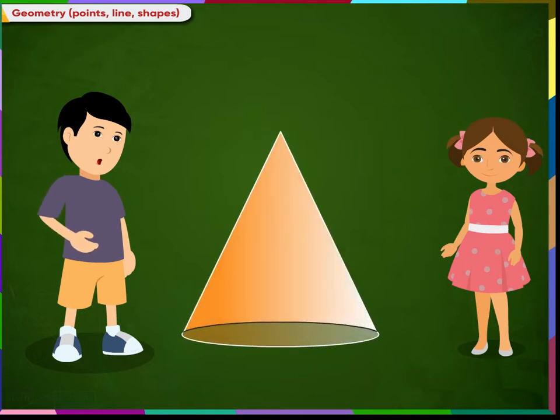This is a cone. A cone has two types of faces: one curved surface and one flat surface. You can observe this shape has a corner and it has a circular edge or a curved edge.